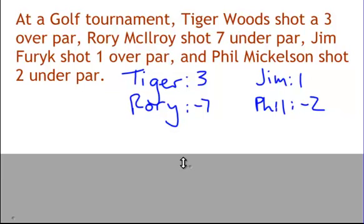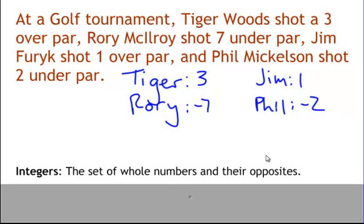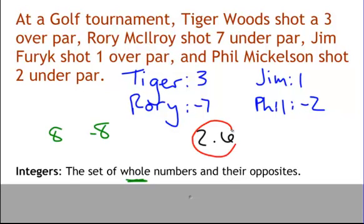These are all what we call integers. Integers are the set of whole numbers and their opposites. Whole numbers meaning 5, 7, 11, or whatever — their opposites just mean the negative aspect of it. For example, a whole number would be 8 and its opposite would be negative 8. It has to be a whole number — it cannot be 2.6, because that is not an integer. Write this down: integers are the set of whole numbers and their opposites.